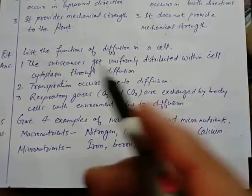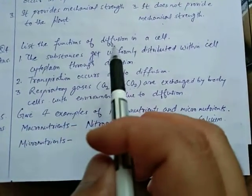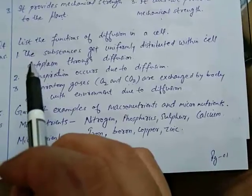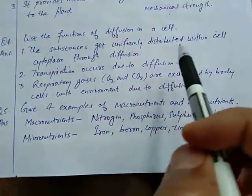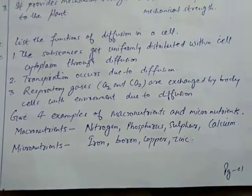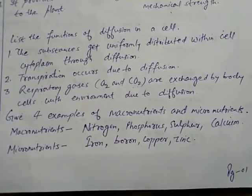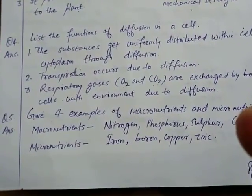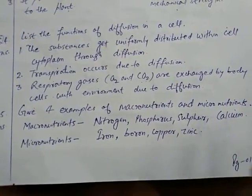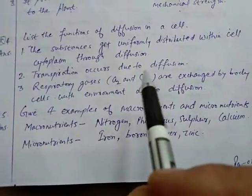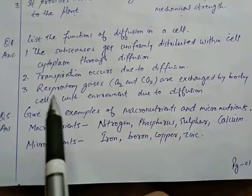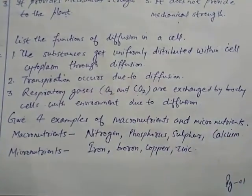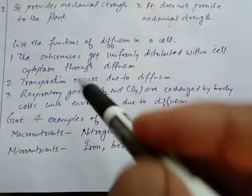Question 4: List the functions of diffusion in a cell. Due to diffusion, substances get uniformly distributed within cell cytoplasm. Transpiration, the loss of water in the form of water vapor from the surface of leaves, occurs due to diffusion. Respiratory gases, oxygen and carbon dioxide, are exchanged by body cells with the environment due to diffusion.